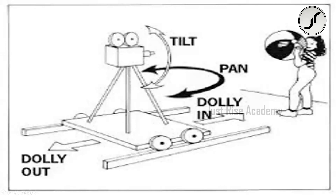The basics of camera movement are tilting, panning, and dolly in and dolly out. The three-legged stand is called a tripod. If you are on a tripod, there is a handle, and the handle is used for tilting. You can tilt up or tilt down to reveal a shot - that is called tilting. If you look at panning, you move the camera left or right to cover that side - that is called panning. These are the first basic movements using a camera on a tripod.